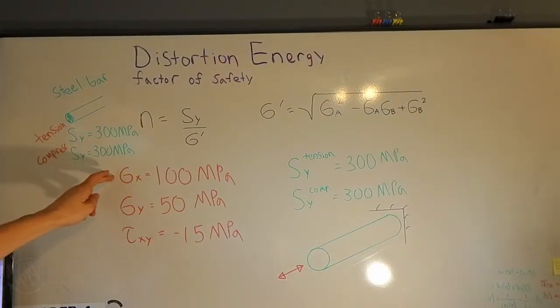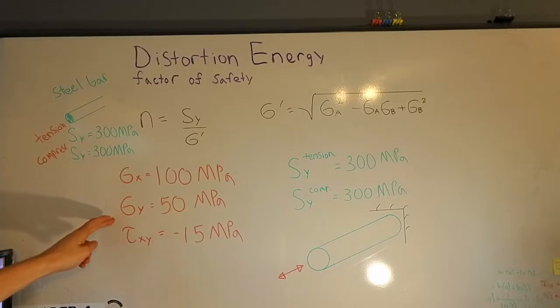Given sigma x is 100 MPa, sigma y is 50 MPa, and tau xy, or the shear stress, is negative 15 MPa, we're going to find the factor of safety.